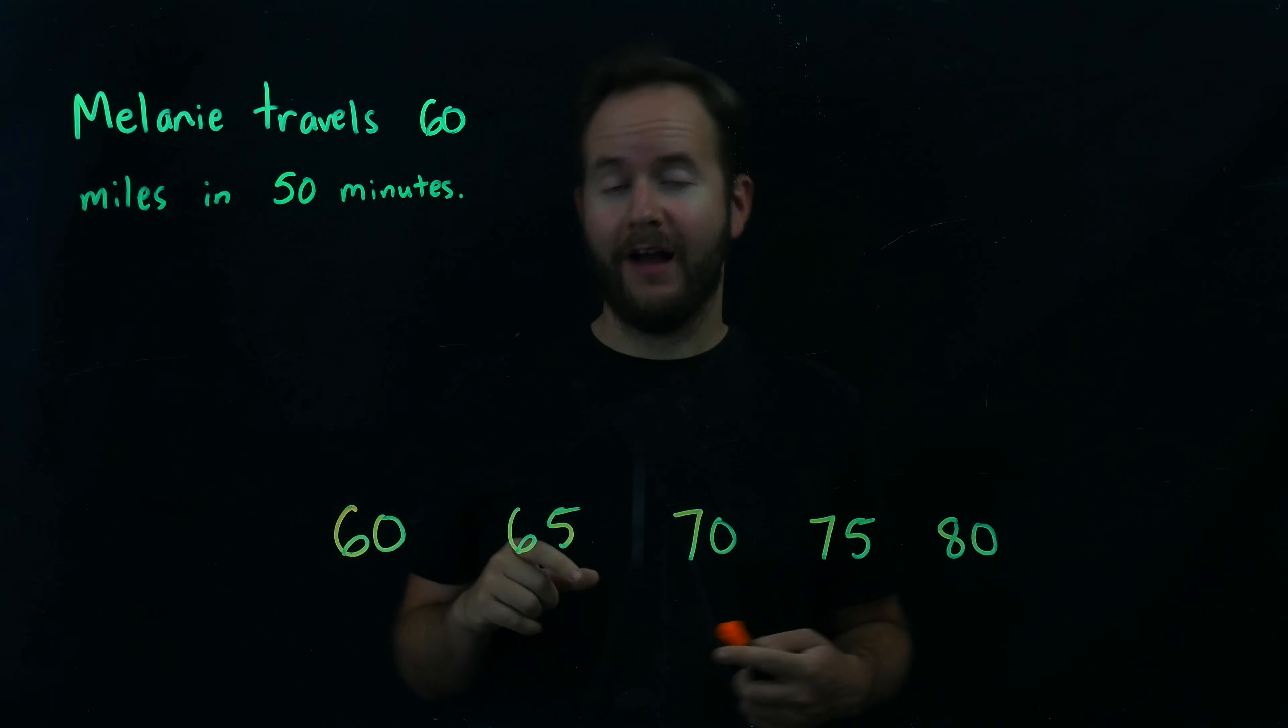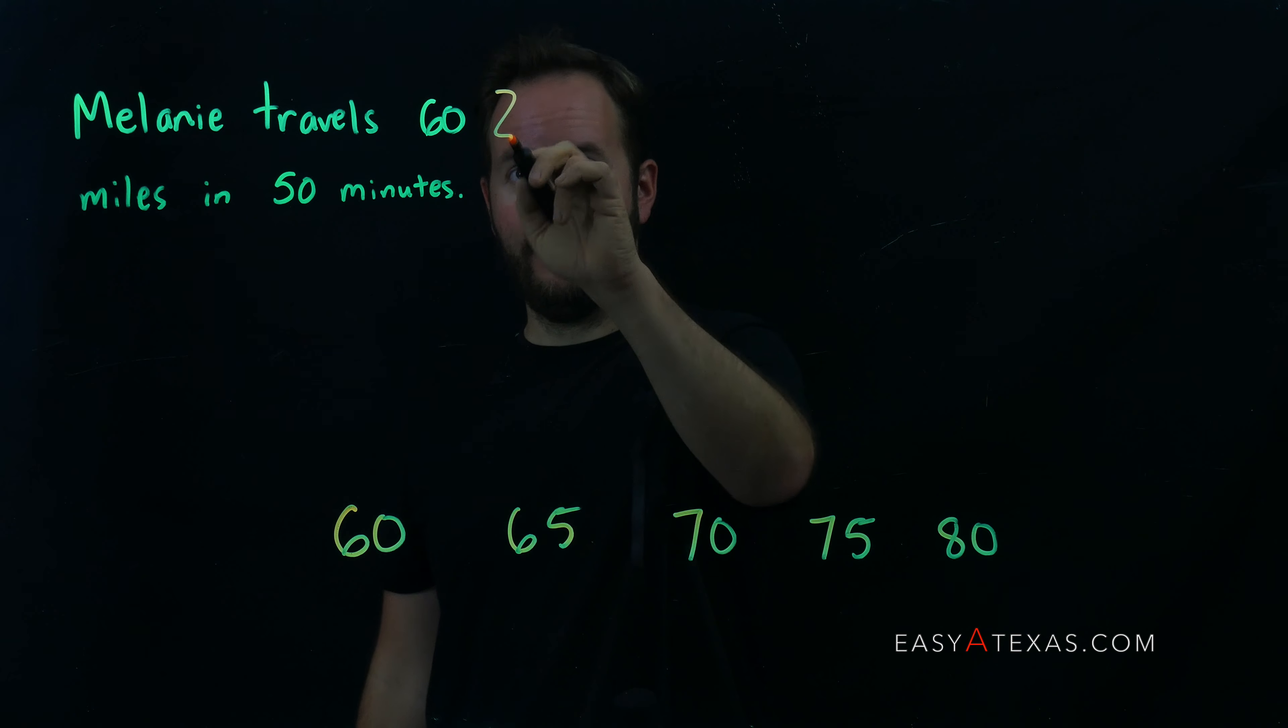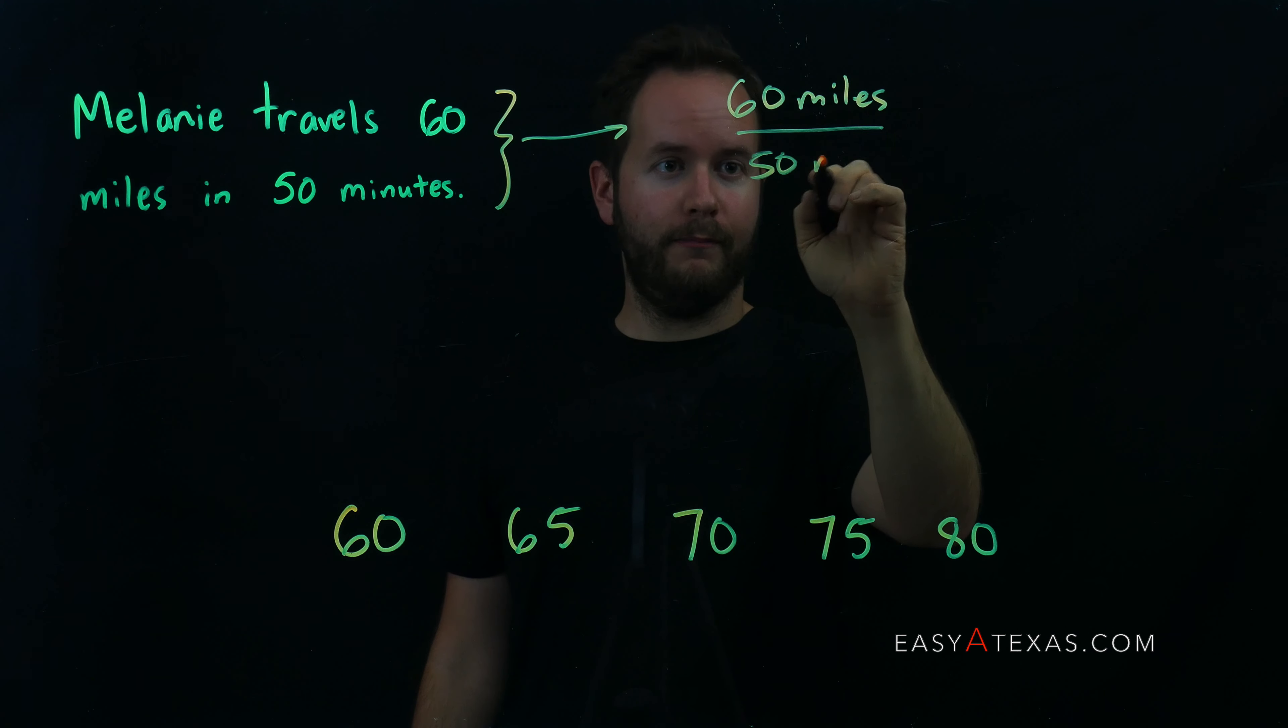To tackle this question, we first need to figure out how fast Melanie is traveling in miles per hour. So she travels 60 miles in 50 minutes. That's going to be 60 miles per 50 minutes.